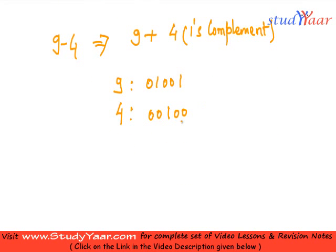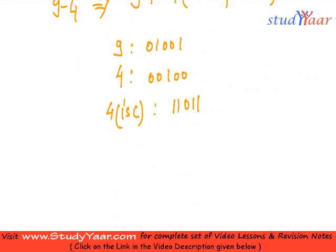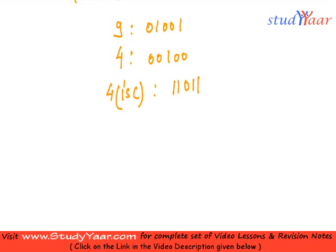So what is 4 in one's complement? 4 in one's complement is 11011. So I just add 9 and 4 in one's complement. So I add this and I add this. What do I get?